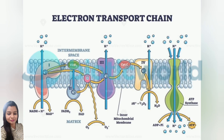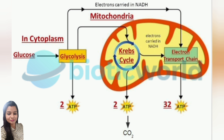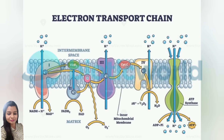Let's dive right in. The electron transport chain, or ETC, is a series of protein complexes and molecules located in the inner mitochondrial membrane in eukaryotic cells. It's the final step in aerobic respiration, following glycolysis and the citric acid cycle. Here, high-energy molecules like NADH and FADH2 donate electrons, which pass through a series of complexes, ultimately producing ATP, the energy that powers almost every process in the cell.